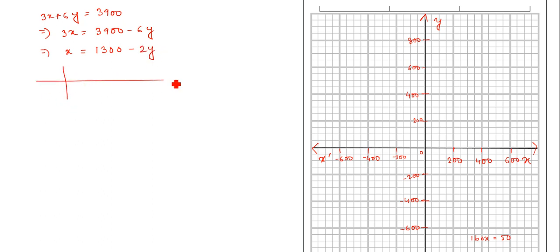Now we are just making a table. So first, we are just putting the value 300, you just check for x equals 300, y will be 500. Next, for x equals 100, y will be 600.